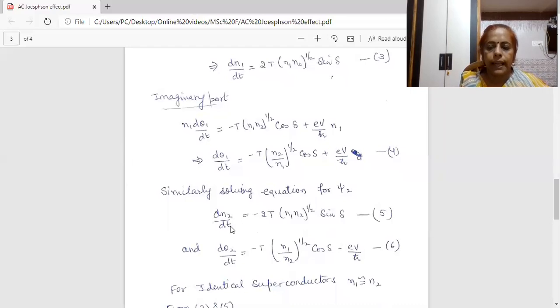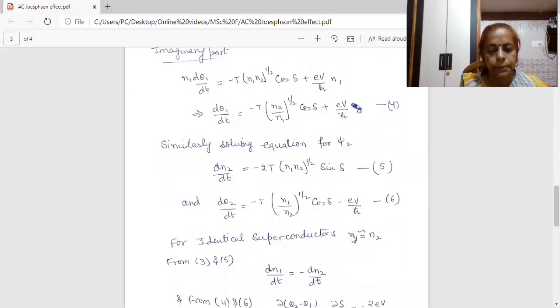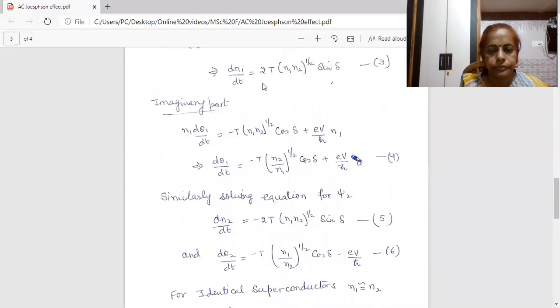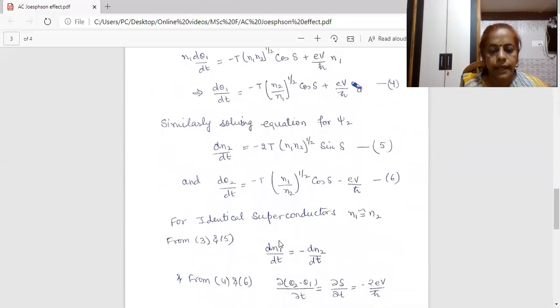Now, I am taking that both superconductors are identical in nature. That means N₁ is approximately equal to N₂. So, from my third and fifth expression, I can show that there is a difference of only negative sign in these two terms. So, from this, I get dN₁/dT equal to minus dN₂/dT. That means if electrons are removing from first junction, they are adding in the another junction. This is depicted by a negative sign.